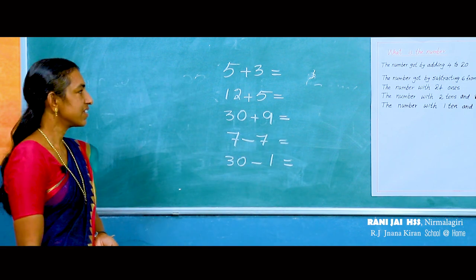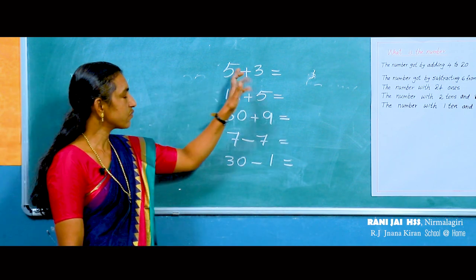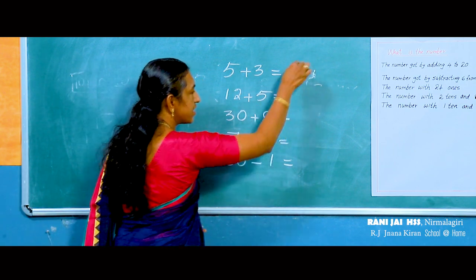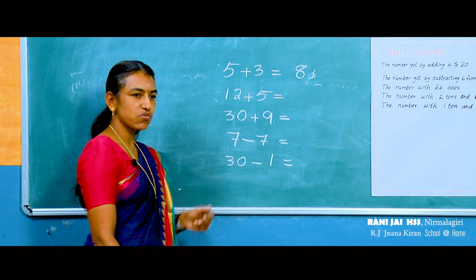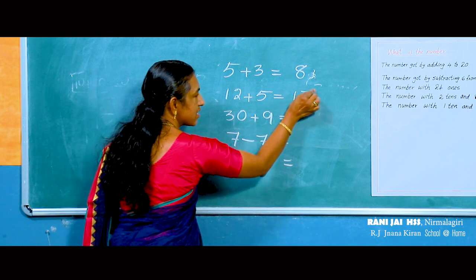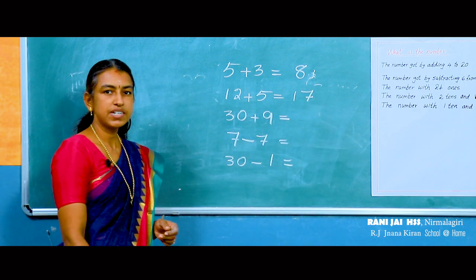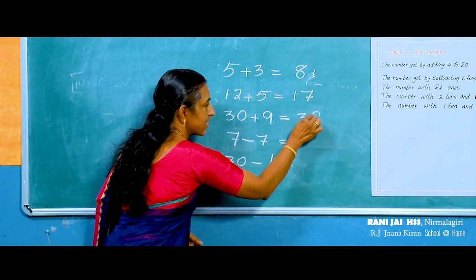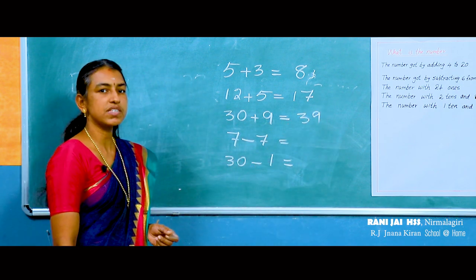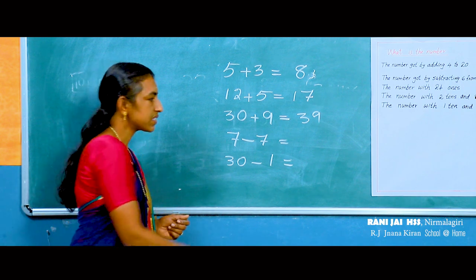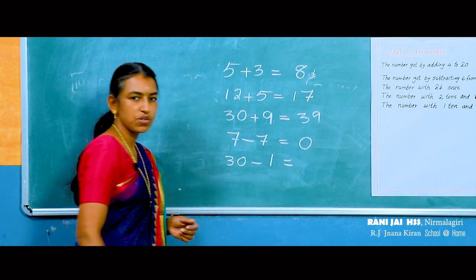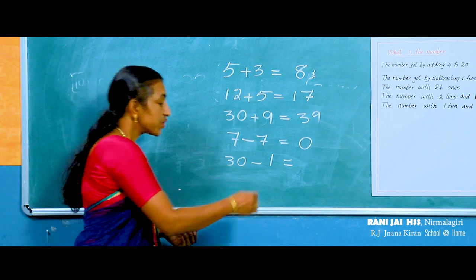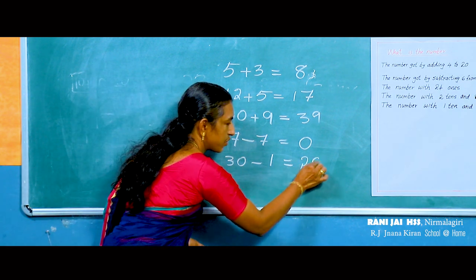Good, look here. What is 5 plus 3? 5 plus 3 is equal to 8. 12 plus 5 is equal to 17. 30 plus 9 is equal to 39. Then what is 7 minus 7? 7 minus 7 is equal to 0. And 30 minus 1 is equal to 29.